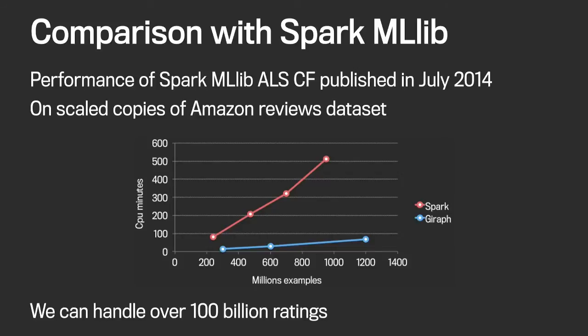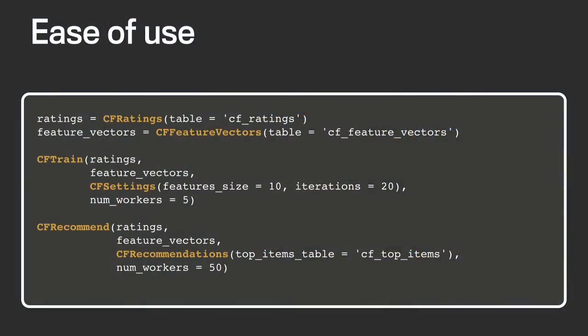How does it compare with other platforms? Spark MLlib is a very popular framework with one of the leading implementations in this domain. In July this year they published numbers for an alternating least squares solution for collaborative filtering, with experiments on scaled copies of the Amazon reviews dataset. We are up to 10x faster than Spark. Additionally, we can handle over 100 billion ratings, while the largest experiment published was on 3.5 billion ratings. The quality of our results is exactly equal to Spark MLlib's because the computation is completely the same — we just do the distribution differently.